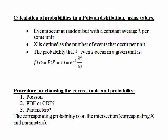Once we've decided it's a Poisson distribution, we then need to determine whether it's a PDF or a CDF and choose the appropriate parameter lambda in the case of the Poisson distribution. So let's have a look at our example.